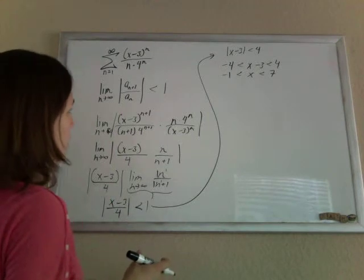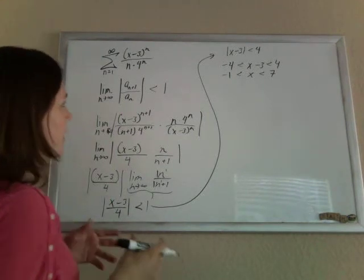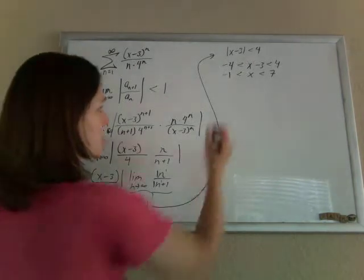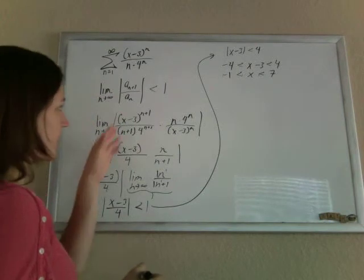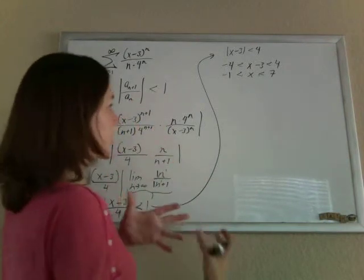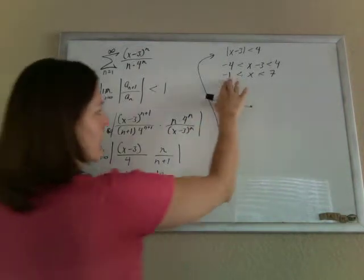And so now, what we need to do is we're almost there, we just don't know whether we can put equal signs here or not, because when this thing equals 1, it's inconclusive. It could converge, it could diverge. So we have to test the endpoints.